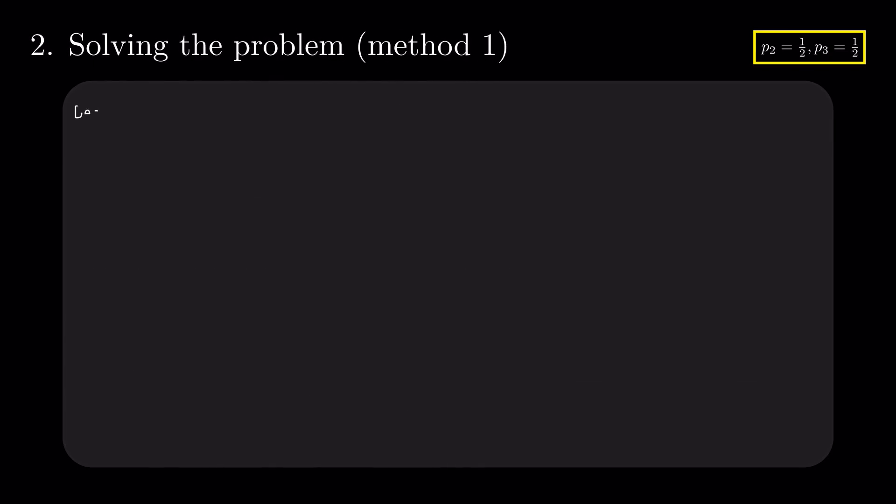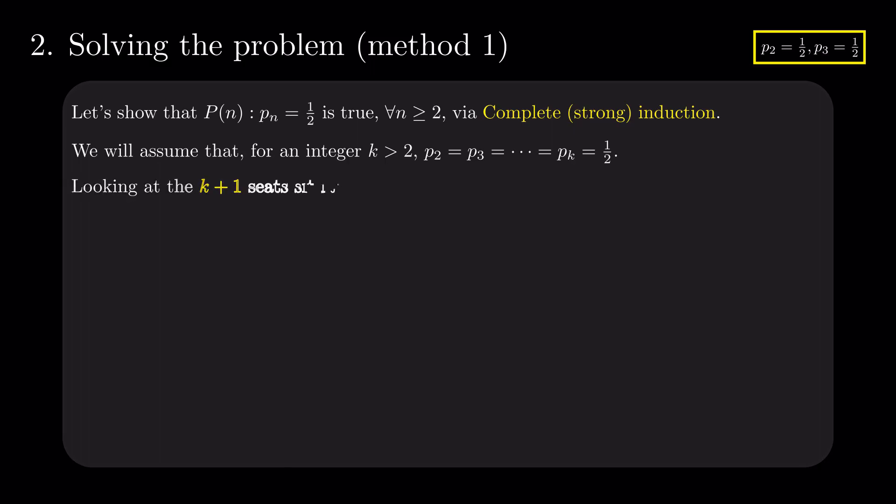The obvious follow-up is to prove the statement P(n) equals 1 over 2 for any n greater than or equal to 2 by a complete induction. Start by assuming that P2, P3, and so on until Pk all equal 1 over 2. Looking at the k+1 seats case, we have the following equally likely cases. A1 sits in his seat, so everyone boards correctly with probability 1, including the last passenger.